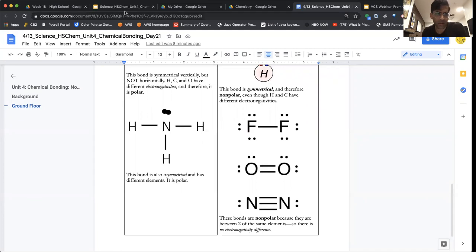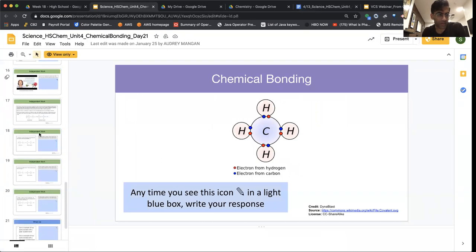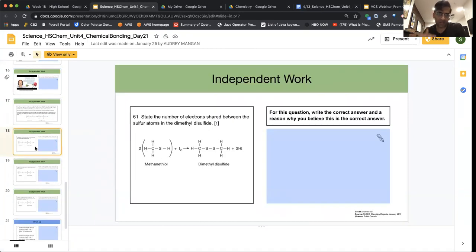Final thing I want to do in this video is just take a quick look at the independent work questions that we have and talk about negotiating them. I'm going to skip over the long explanation in the previous slide and go straight to this. So when we talk about the number of electrons shared between the sulfur atoms in this long bond, you want to try to not get intimidated.